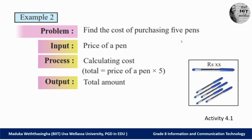The next example: find the cost of purchasing 5 pens. You go to a shop and want to buy 5 pens. You already know the amount you want to purchase — 5 pens. Another input you need is the unit price of a pen — that is, the price of one pen. Then we can calculate the total amount to be paid for purchasing 5 pens.